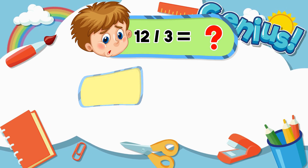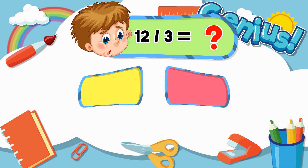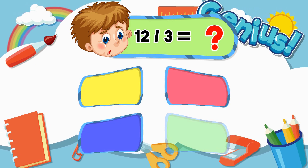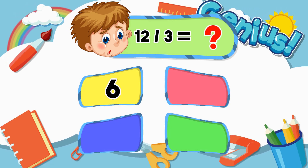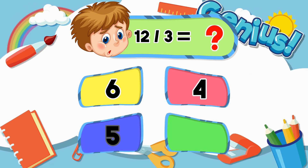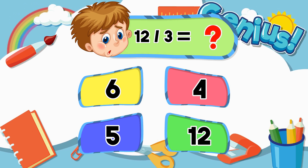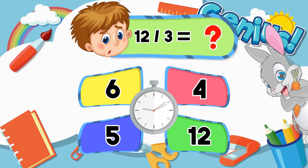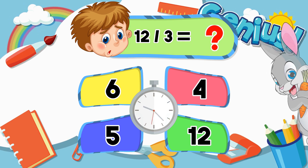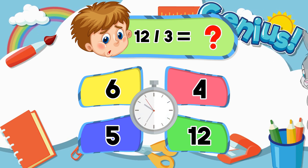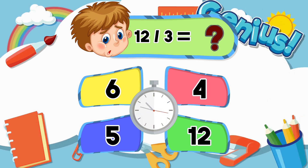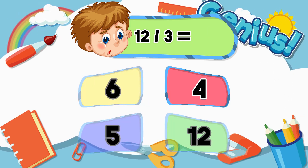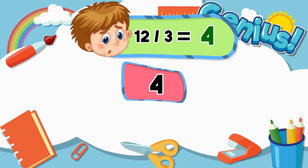What is 12 divided by 3? 6, 4, 5, 12. The correct answer is 4.